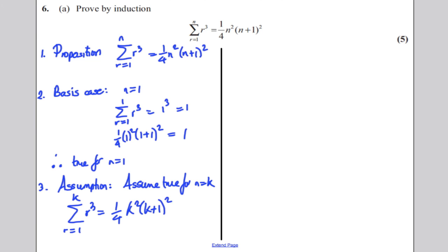Now what I'm going to try and show is I'm going to try and show that the proposition is also true for K plus 1. So this is my aim. This is not part of my proof. My aim is to actually show that the sum from R equals 1 to K plus 1 of R cubed is actually this formula here, but with N equals K plus 1. So it's a quarter times K plus 1 squared times K plus 2 all squared. That's my aim.